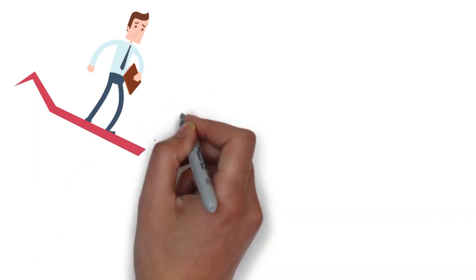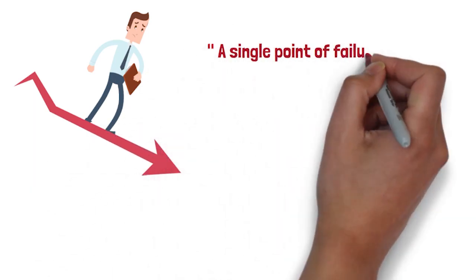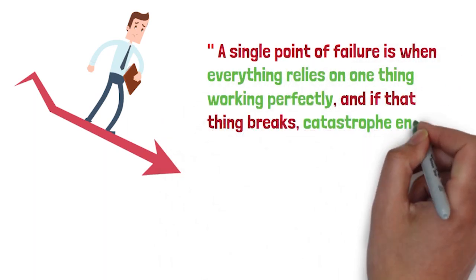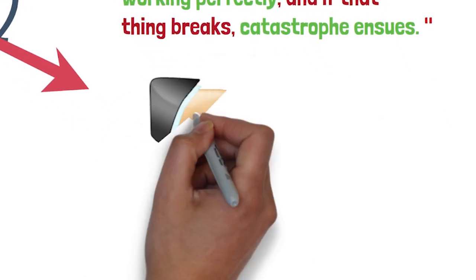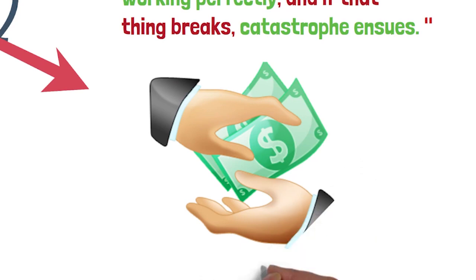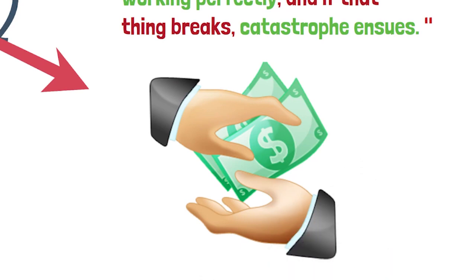To guard against the damage that can arise from uncertainties, it's vital to avoid relying solely on single points of failure. A single point of failure is when everything relies on one thing working perfectly, and if that thing breaks, catastrophe ensues. A common example is relying solely on a paycheck to fund all short-term expenses without any savings as a buffer.